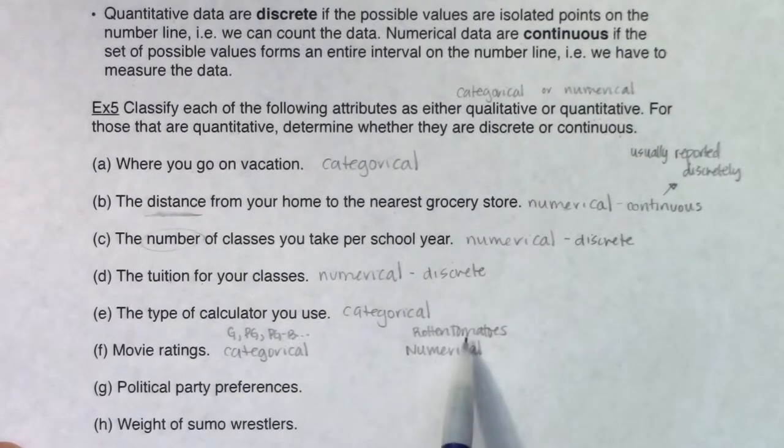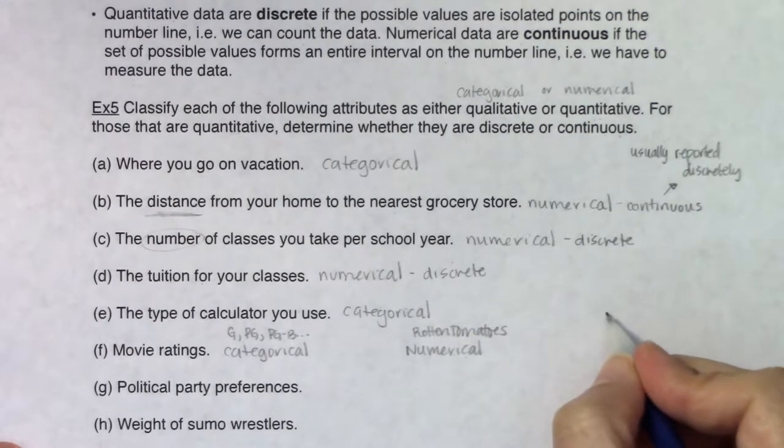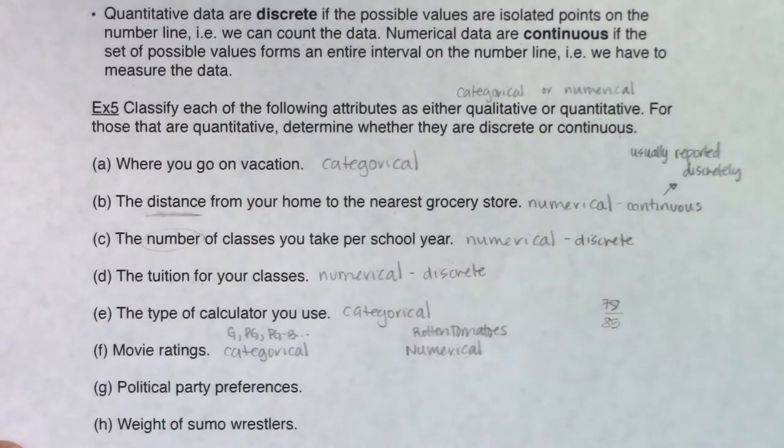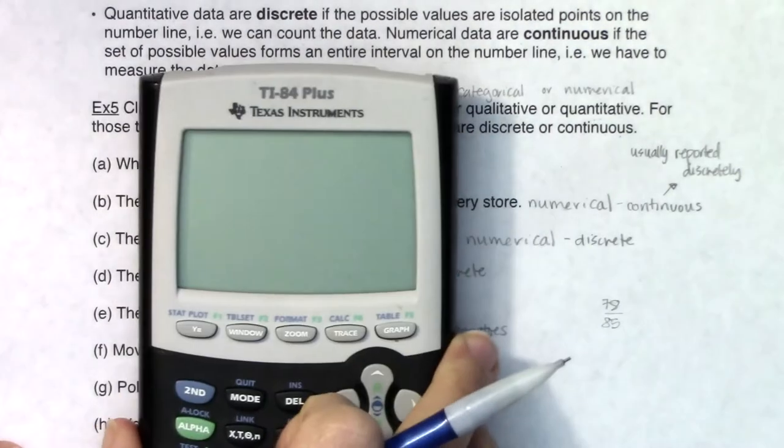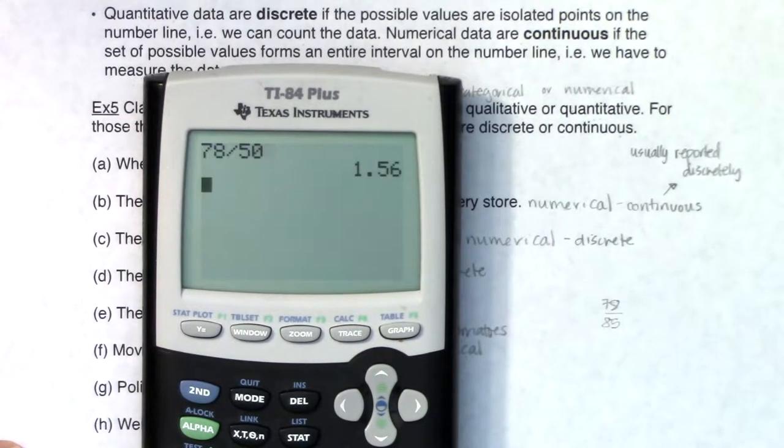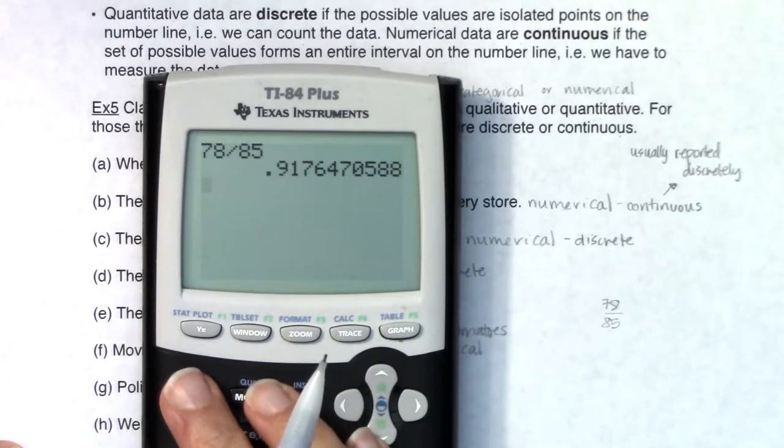The last numerical one we have is rotten tomatoes. Rotten tomatoes comes from being a fraction. They'll say something like you had 85 reviews and 78 of them were positive and they'll turn that into a percentage. So let's take 78 divided by 85 - about 92 percent.